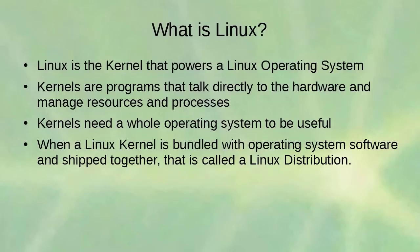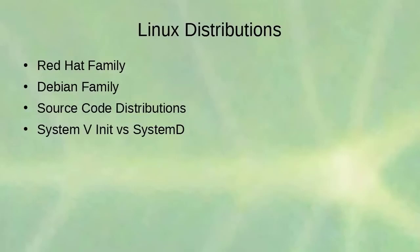Kernels need a whole operating system to be useful. GNU/Linux combines the GNU software with the Linux kernel. Android is also the Linux kernel combined with other software to run a phone. When a Linux kernel is bundled with operating system software and shipped together, that is called a Linux distribution. There are many families of distributions — the Red Hat family, the Debian family, source code distributions — and most have switched to systemd, though some still use the old init system.